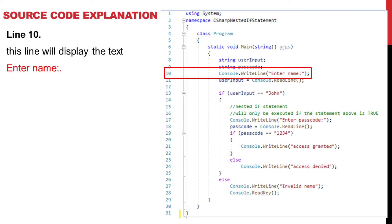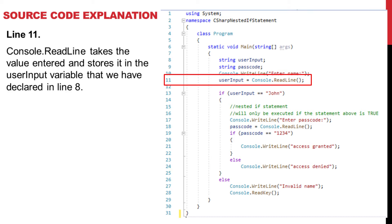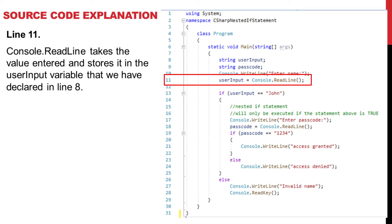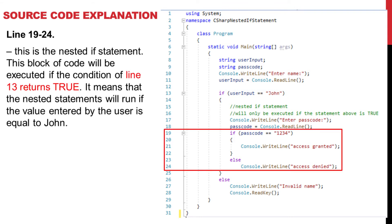Line 10: This line will display the text "Enter name." Line 11: Console.ReadLine takes the value entered and stores it in the user input variable declared in line 8. Line 13: This is the start of the if statement, where the conditional statement is being evaluated.